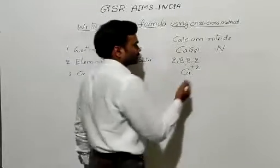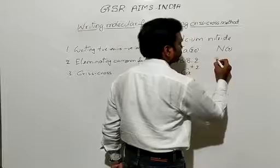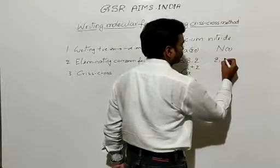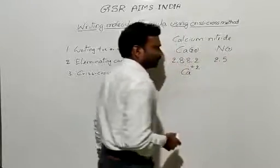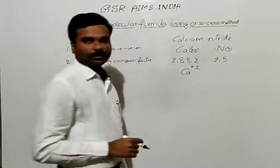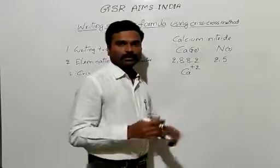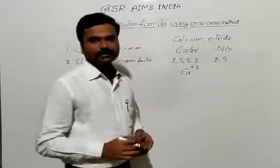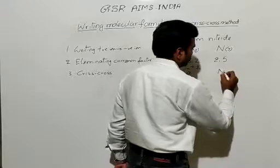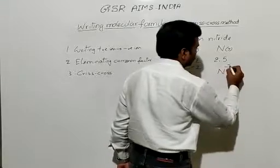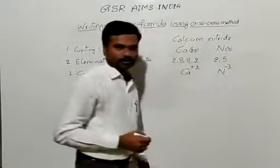Coming to nitrogen, its atomic number is 7. If you write the configuration: 2, 5. In the valence shell, nitrogen has 5 electrons. To become stable, it will gain 3 electrons and form an N³⁻ anion.